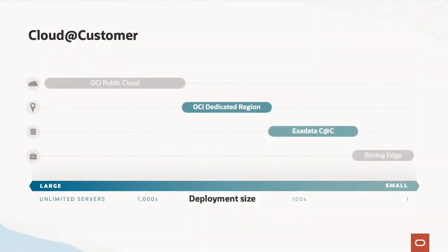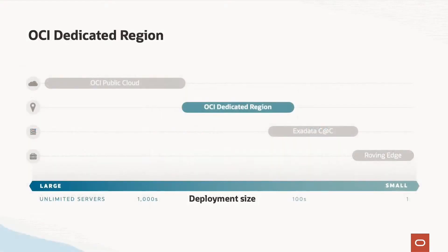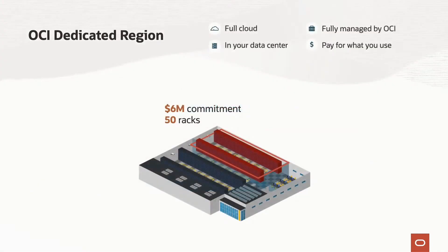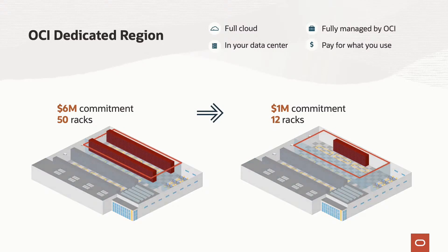Thinking more about what we're doing around Cloud at Customer, we've made a lot of significant progress both in terms of the product as well as customer adoption. We've gone live with many customers, like NRI, that runs a significant portion of financial services in Japan on our dedicated region, customers like the Oman Technology Group that is revolutionizing their government workloads with our dedicated region Cloud at Customer, and Telefonica that's doing things like upgrading their infrastructure with our Exadata Database Cloud at Customer. Just a quick recap: our dedicated region Cloud at Customer is all of the functionality of our public cloud in any location that you want. You provide space and power, we provide all of the hardware and the software and the operations. But what we're announcing today is a significant reduction in the footprint and the entry point to be able to get one of these.